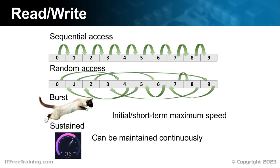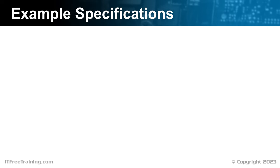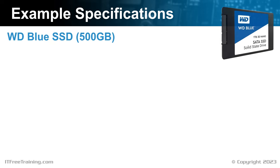Manufacturers like to quote the burst speed to give the fastest speed the solid state drive can achieve. However, if the system is under load for a period of time, this speed will quickly drop. Let's have a look at some manufacturers' specifications to get an idea of what to look for. I will look at a Western Digital 500GB solid state drive. The manufacturer is free to release any specifications they like, so the specifications you are given for your device may be different. Be careful when reading them.